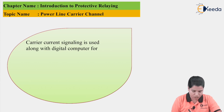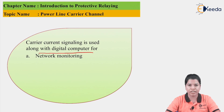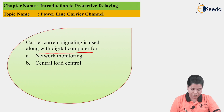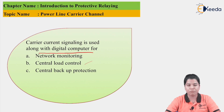The carrier current signaling is used along with the digital computer for the following purposes. First is network monitoring — all the parameters of the power system network are monitored, whether there is some abnormal condition, a fault condition, or whether the values of voltage and current are varying. Next is central load control, where in a centralized system the load can be controlled by using the power line carrier channel. Next is central backup protection. There are two types of protection — primary protection and backup protection. By using central backup protection, the total backup protection of the power system can be monitored so that the equipment used for backup protection does not operate for the primary protection.